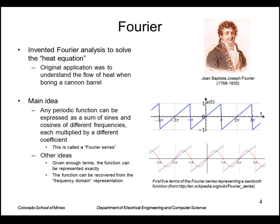Given enough terms, the function can be represented exactly. So this shows a sawtooth function, and what we show here is the first couple of terms of the Fourier series. This is the first five sines and cosines which, added together, do a pretty good job of approximating the original sawtooth function. If you have enough terms, of course, you can represent the function exactly.